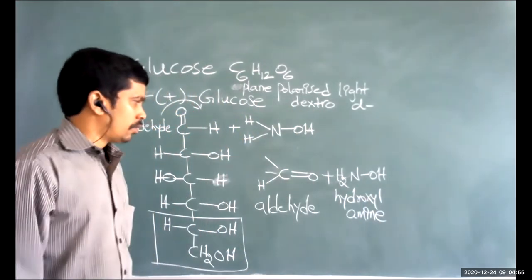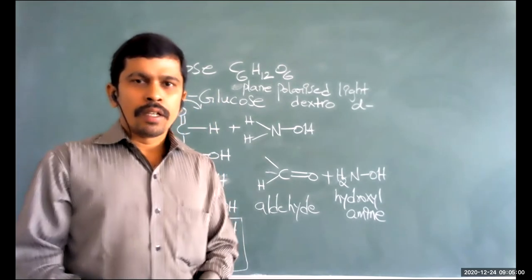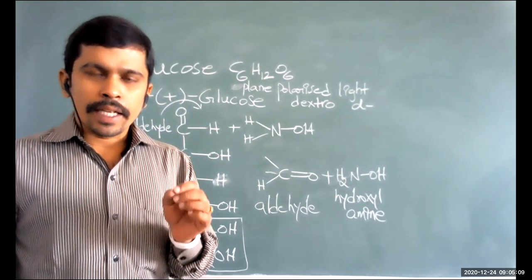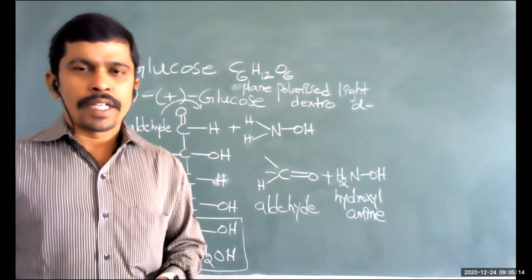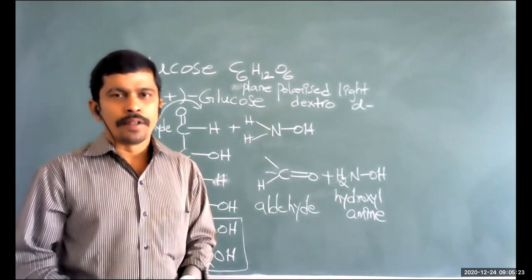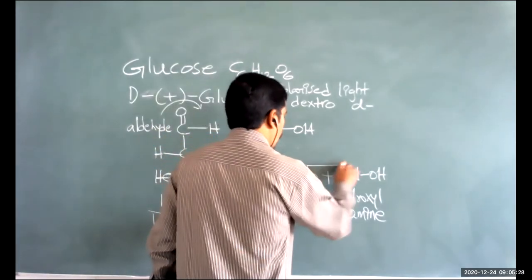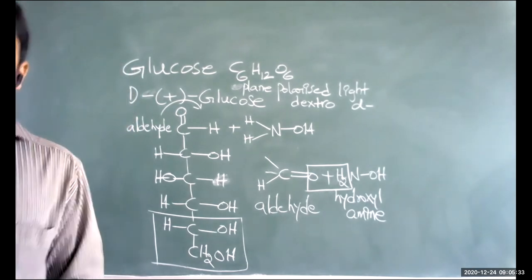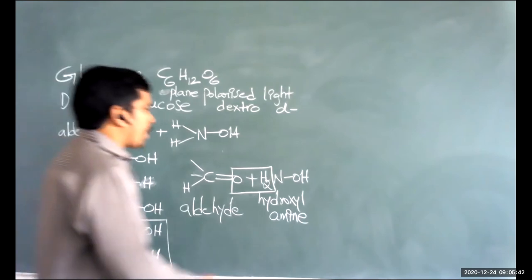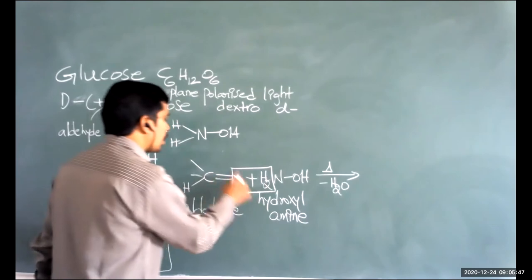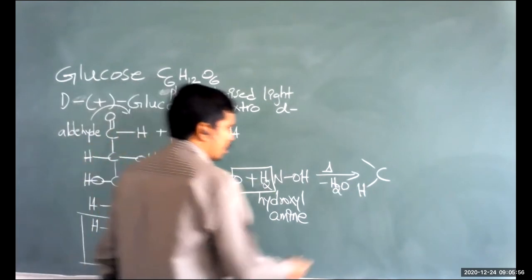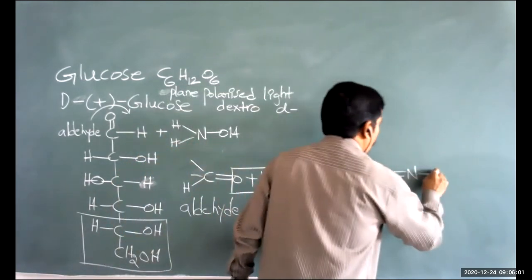In a condensation reaction, simple molecules react to form a larger molecule by elimination of small molecules like water. When the aldehyde group reacts with NH2OH and water is removed, a double bond forms between carbon and nitrogen, giving the group C=N-OH. This is the oxime functional group. When an aldehyde forms an oxime it is called an aldoxime.